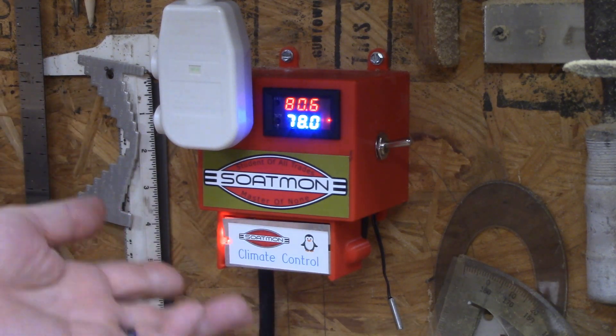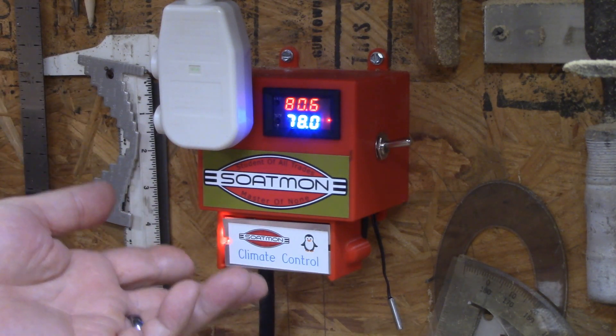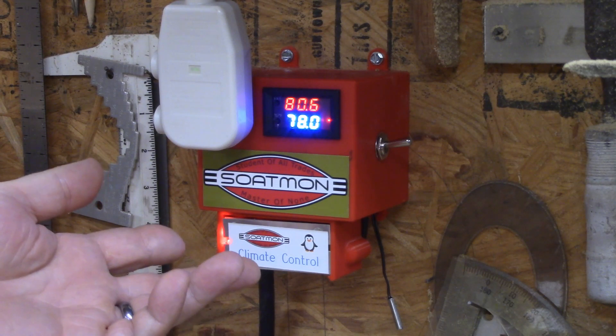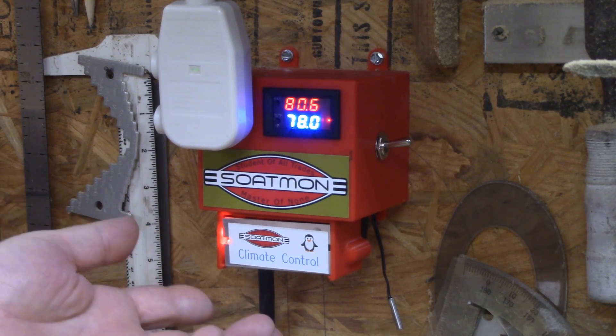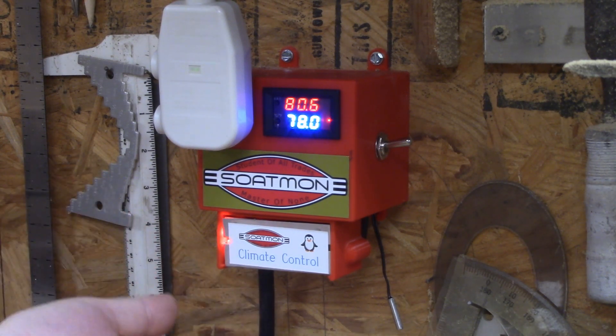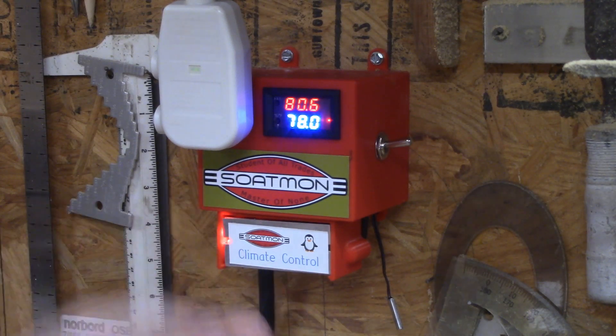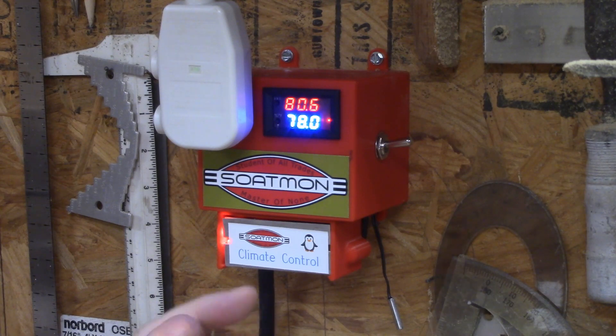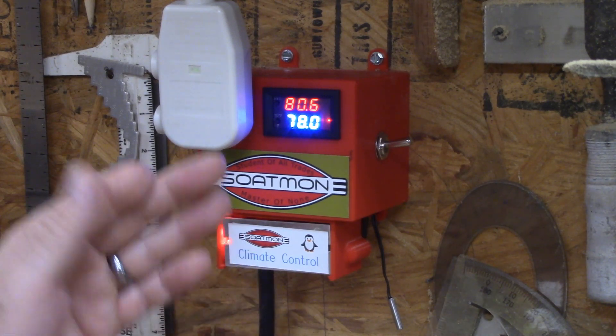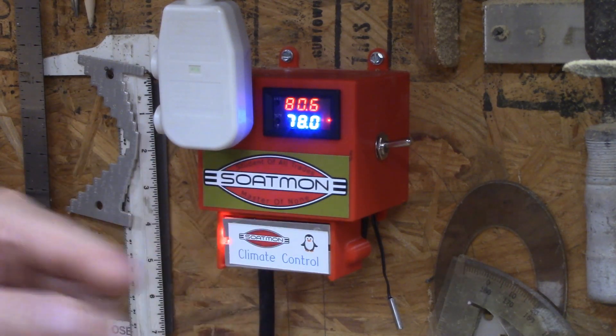I'm using it to control an air conditioner, for example, but a lot of people use them to control things like when they're brewing beer to keep it at a certain temperature when it's fermenting, rising bread, hatching chicken eggs. Anything where you need a certain temperature to maintain within a certain range, you can use this thermostat to control that.